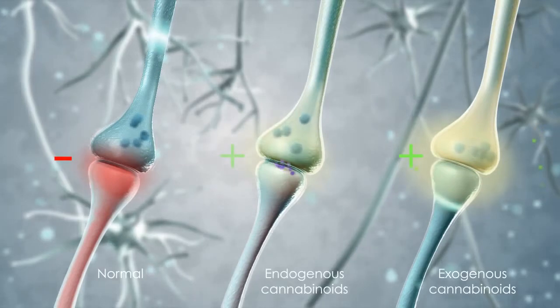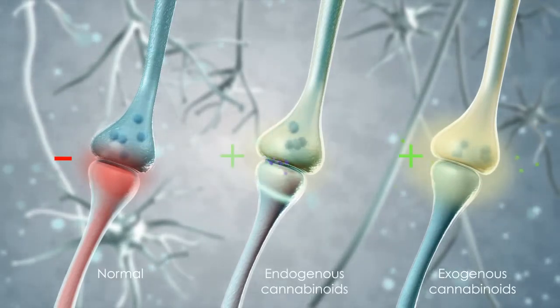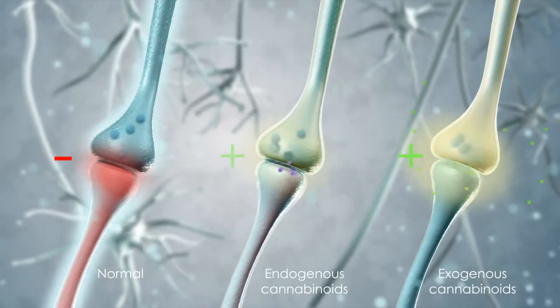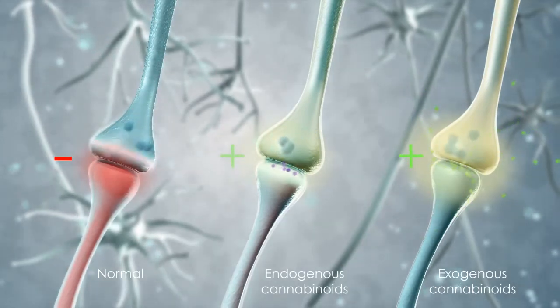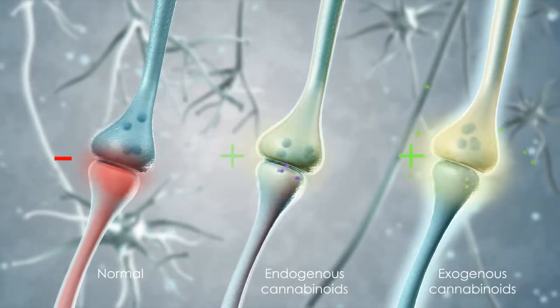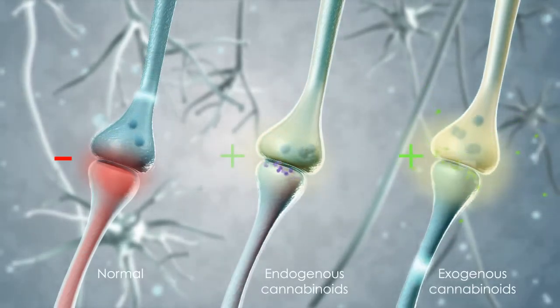The effects of cannabinoids may be illustrated by comparing three neuronal synapses showing normal pain transmission, the influence of endogenous cannabinoids, and the influence of exogenous cannabinoid administration.